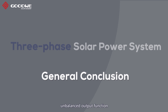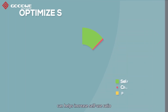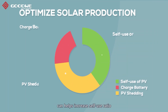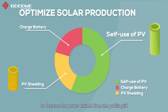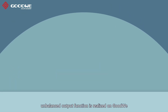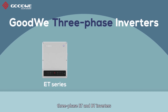So now we can have a general conclusion: the unbalanced output function in a three-phase solar power system helps increase the self-use ratio and optimize solar production to decrease the power drawn from the public grid.